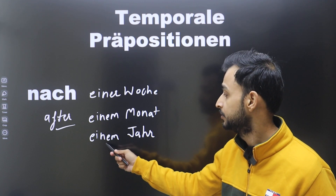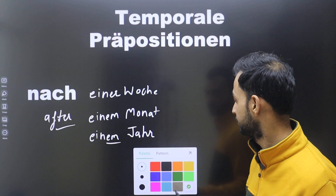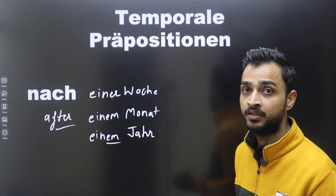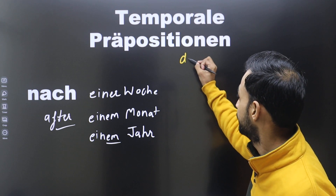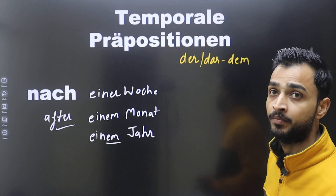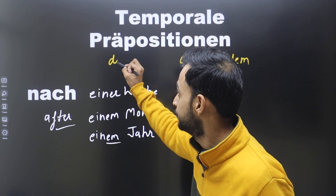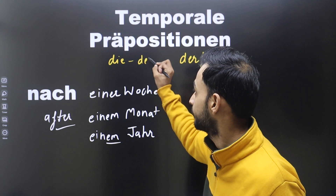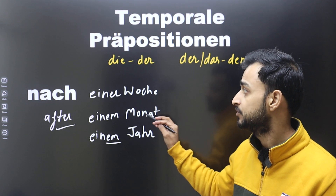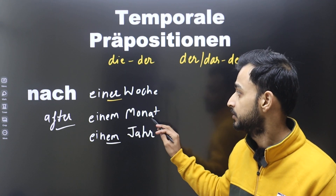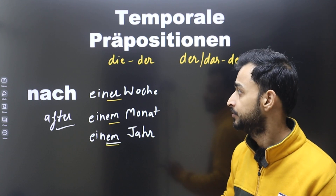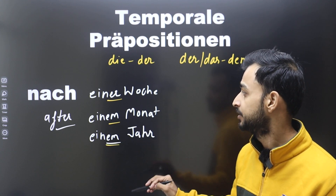With dative, we use the article accordingly: 'der' and 'das' change into 'dem,' and if the article is 'die' (feminine), it changes into 'der.' So 'Woche' is die, so it's 'nach einer Woche.' 'der Monat' becomes 'einem,' and 'das Jahr' becomes 'einem.' After one week, after one month, after one year.